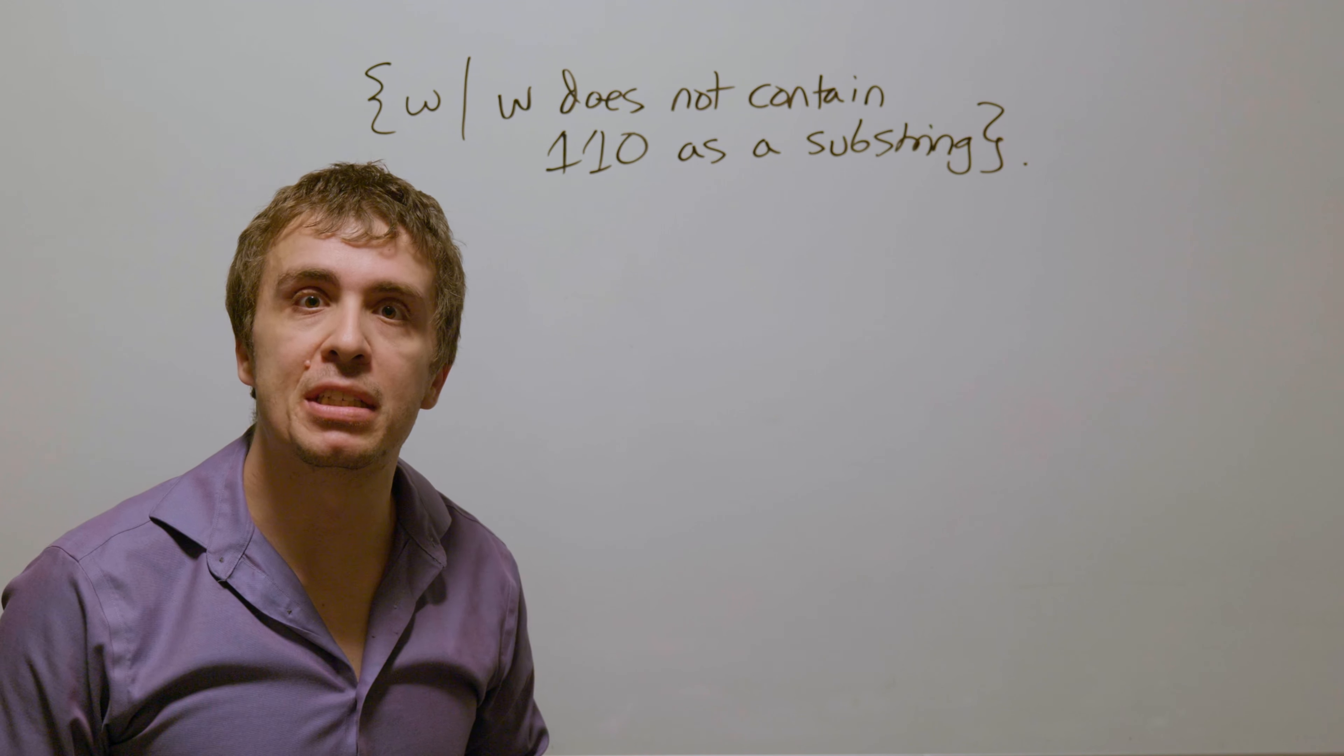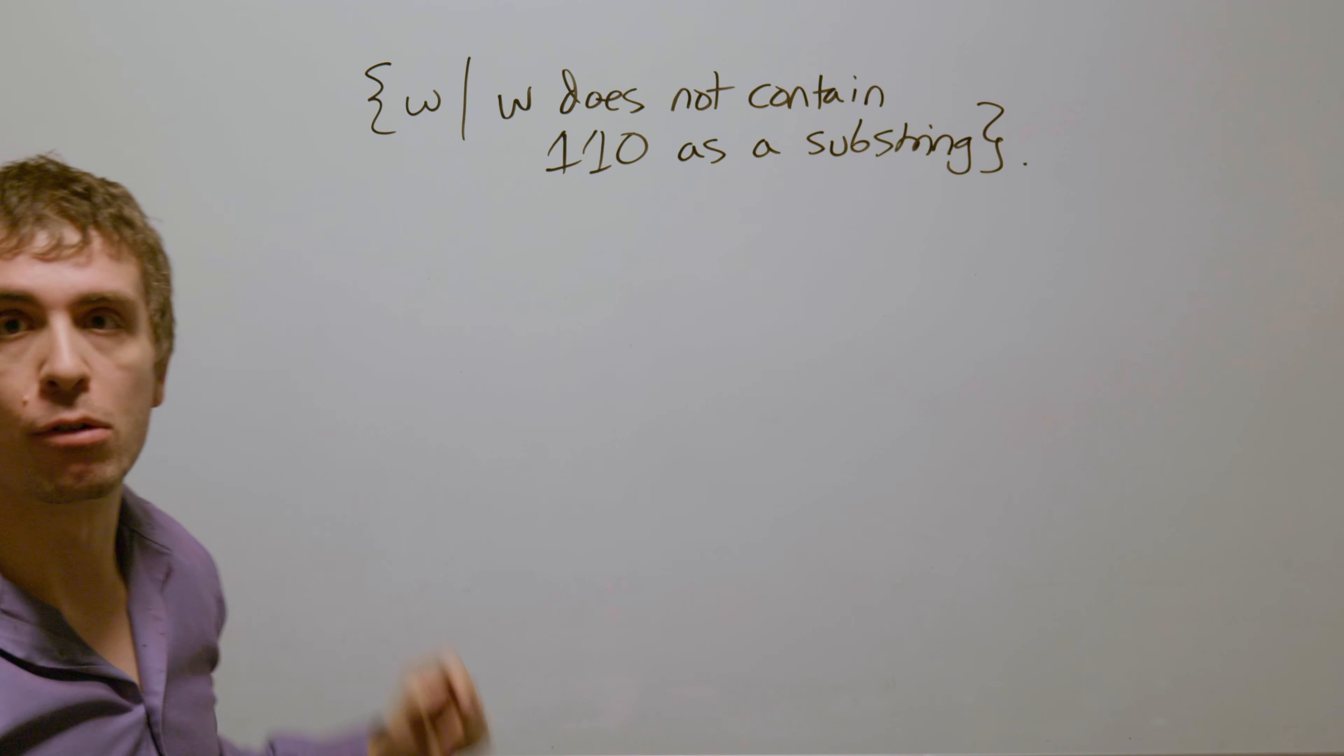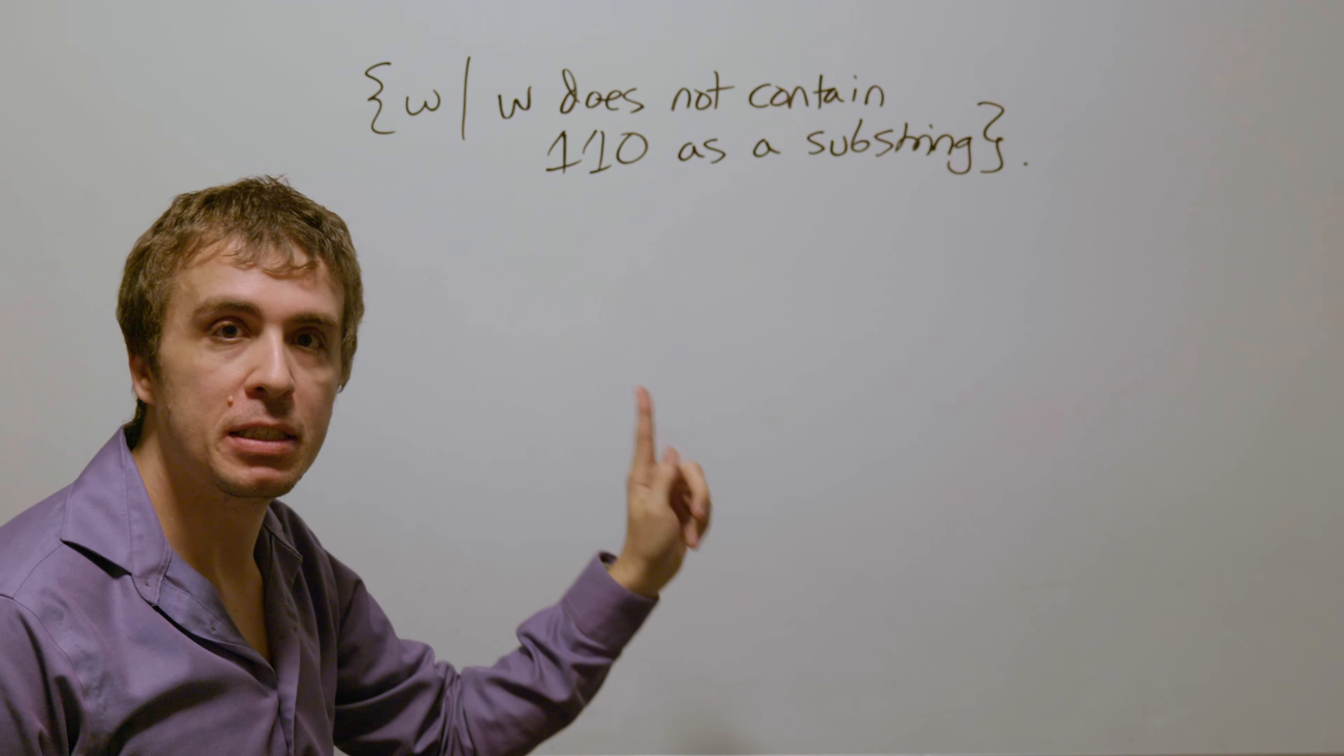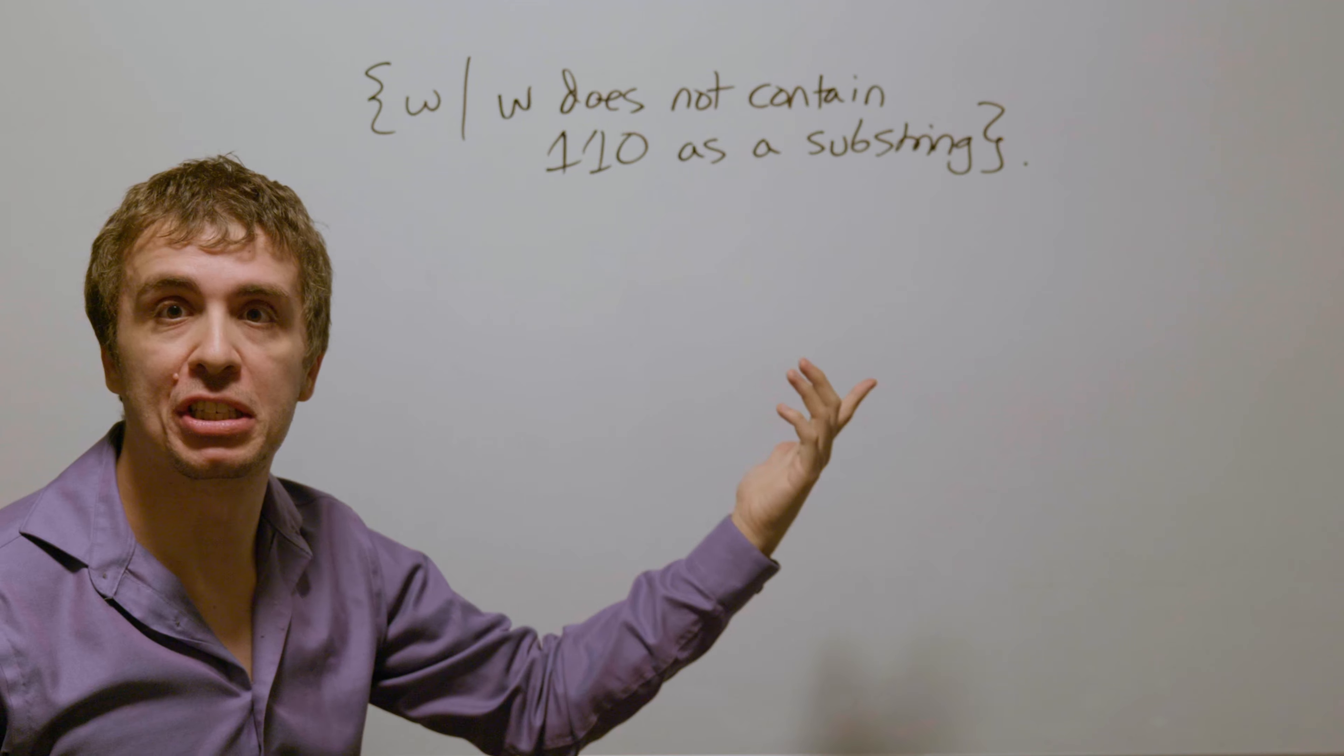Okay, so let's make a deterministic finite automaton for this language, which is the set of all binary strings where w does not contain 110 as a substring.